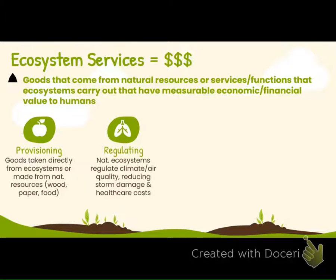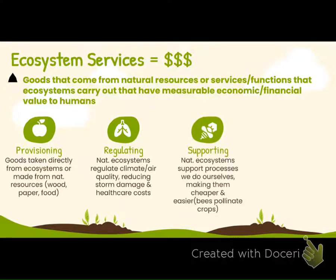Regulating services are where the ecosystem regulates, for example, the climate, the air, or the water quality, reducing storm damage or healthcare costs caused by poor air or water quality. Supporting services are natural ecosystem processes that we could do ourselves, but the ecosystem makes it cheaper — for example, bees pollinating crops.